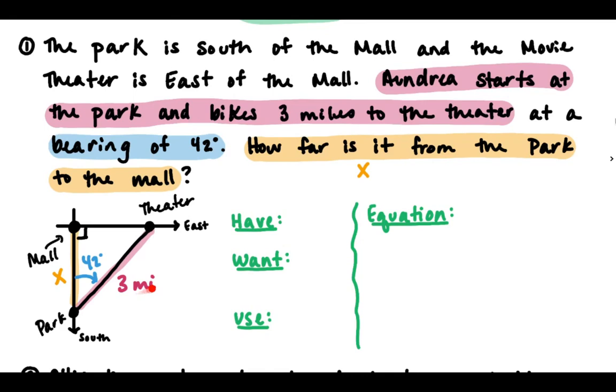The side we want is x, and for 42 degrees, that's the adjacent side. So think which trig ratio uses adjacent and hypotenuse, and hopefully we come up with cosine is adjacent divided by the hypotenuse.